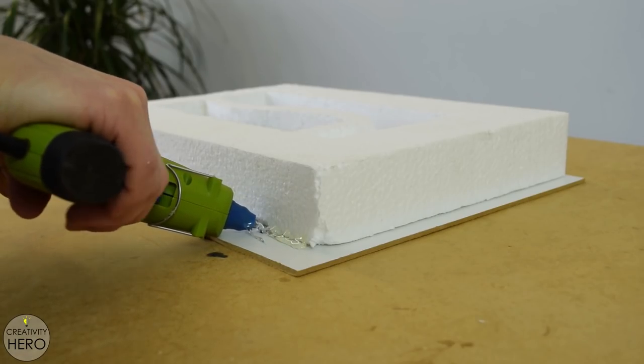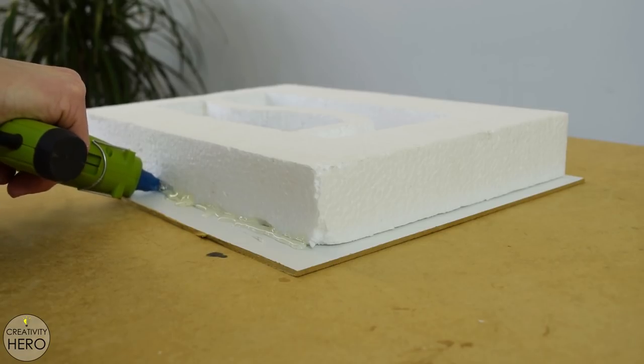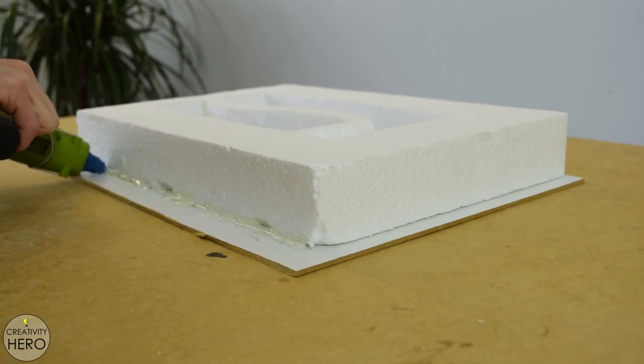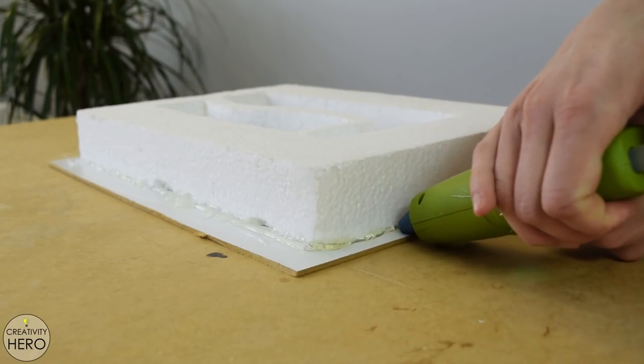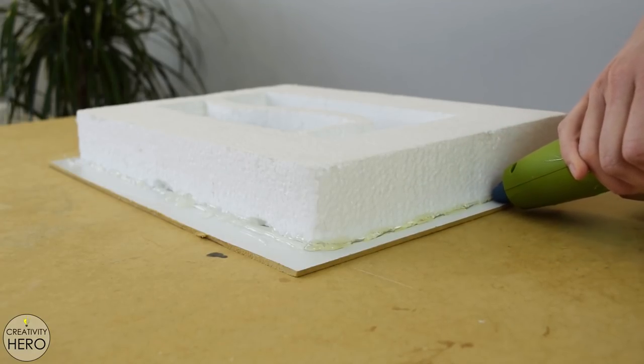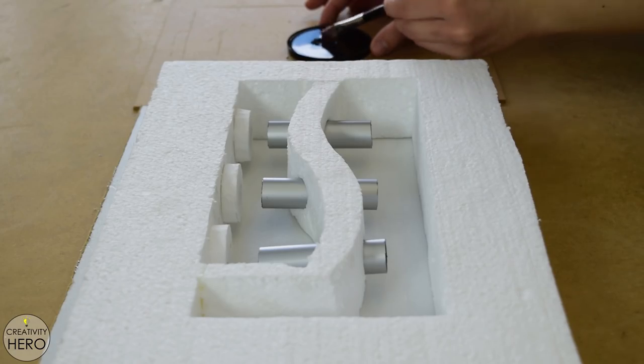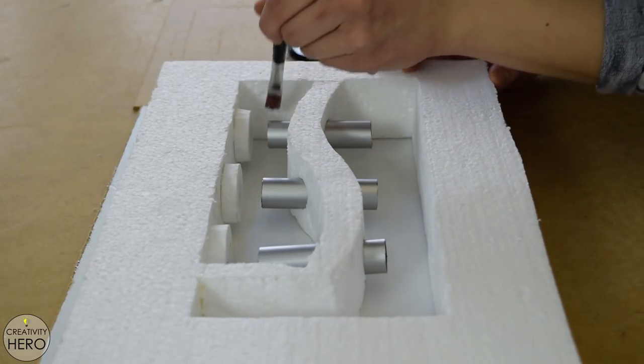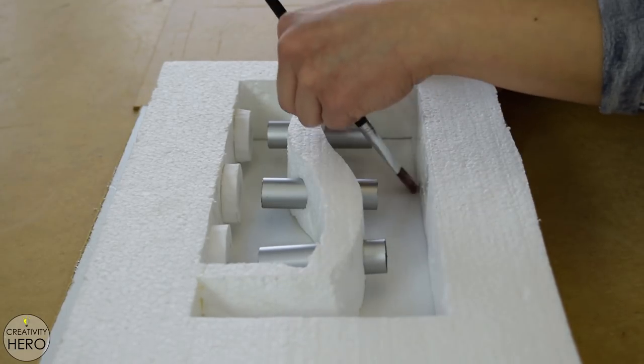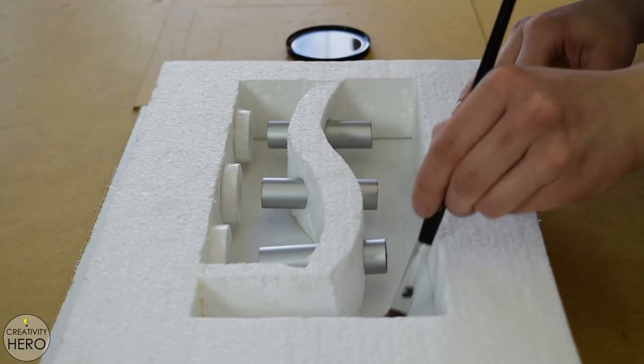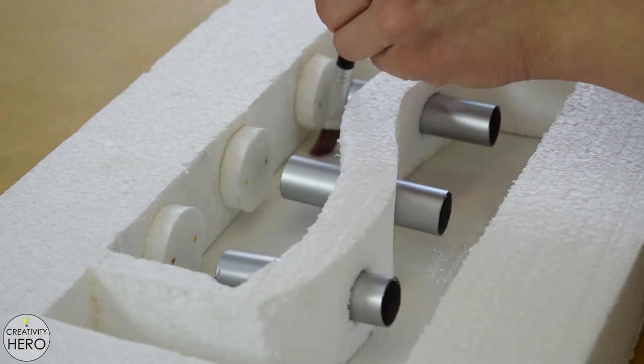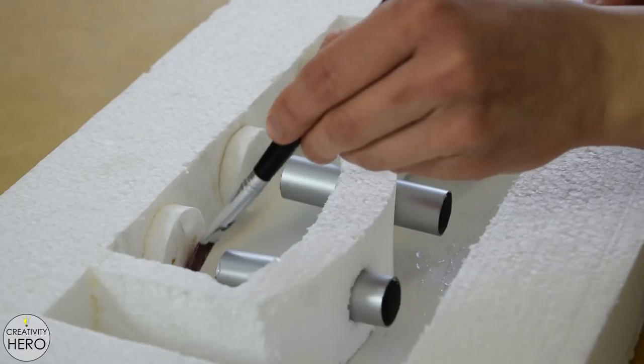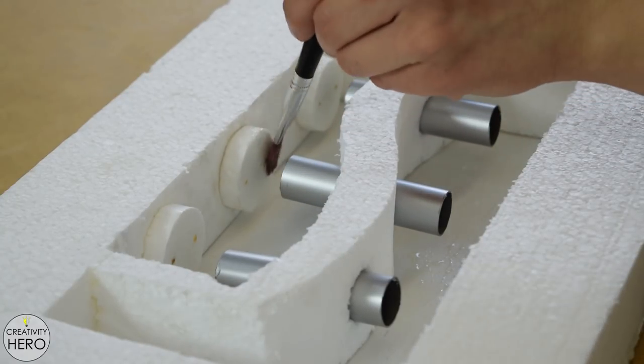To make sure the mold is firmly attached onto the fiber board I applied hot glue from the outside. This way I'll prevent the water from the concrete from leaking. Before making the concrete mix it's a good idea to use a release agent that will make removing the concrete from the mold after it has cured very easy. So I spread cooking oil all over the surface with a brush making sure I don't miss a spot.